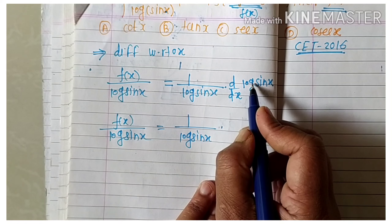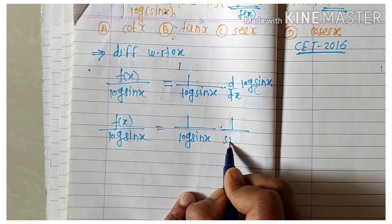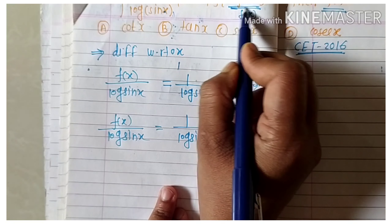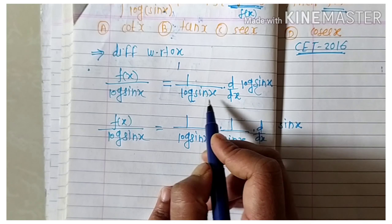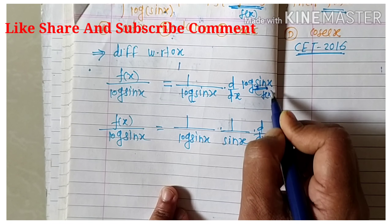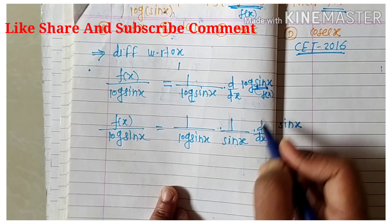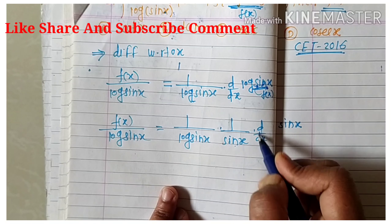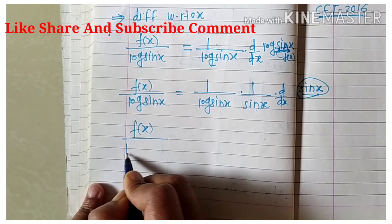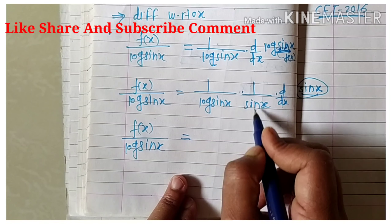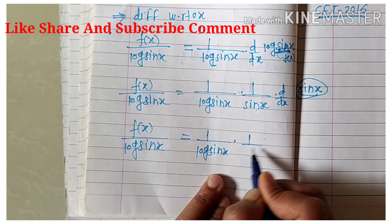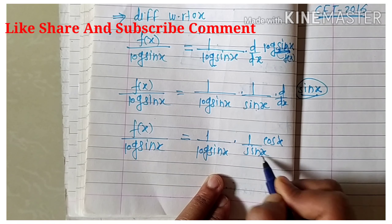Into the derivative of the inner log term, we again apply the chain rule. The derivative of log(sin x) is 1 upon sin x into the derivative of sin x. We consider sin x as our f(x), so the derivative of log(f(x)) is 1 upon f(x) into f'(x), giving 1 upon sin x into the derivative of sin x. Therefore, the left hand side remains f(x) times log(sin x) and the right hand side is 1 upon log(sin x) into 1 upon sin x into cos x.